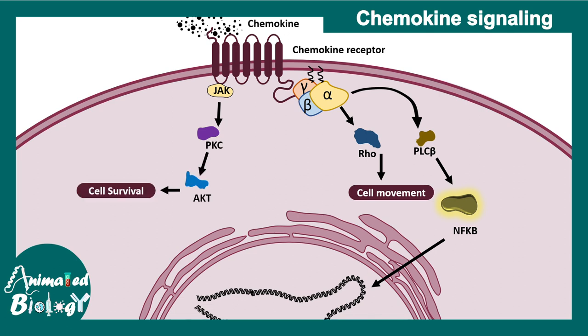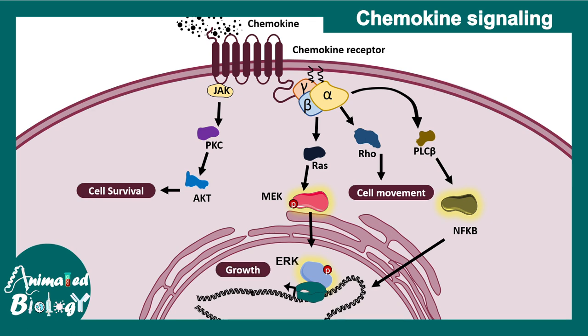The G protein-coupled receptor and chemokine receptor signaling can also crosstalk with many pathways, such as the JAK-STAT pathway and PI3K-AKT pathway, which leads to cell survival. It has also been shown that there is an interaction with the MAP kinase pathway and the chemokine receptor, which leads to activation of RAS and eventually MEK, ERK, and the whole MAP kinase cascade. This leads to ERK translocation into the nucleus, thereby activating signals that lead to gene expression in the categories of cell growth, proliferation, and cell survival.